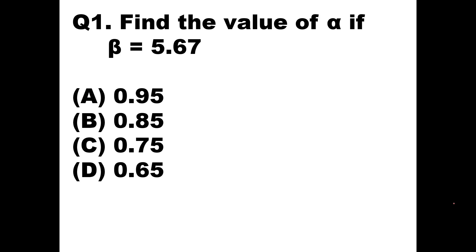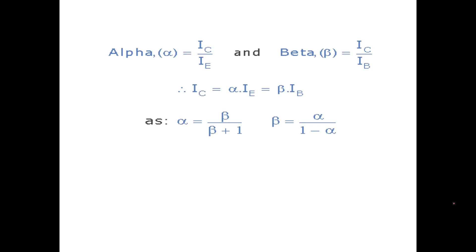Question number one: find the value of alpha if beta is equal to 5.67. This question is based on current amplification factor in common base, that is alpha, and current amplification factor in common emitter, that is beta. We have proved that alpha in terms of beta and beta in terms of alpha. Here we have to find the value of alpha in terms of beta.